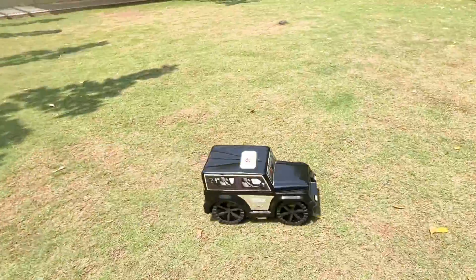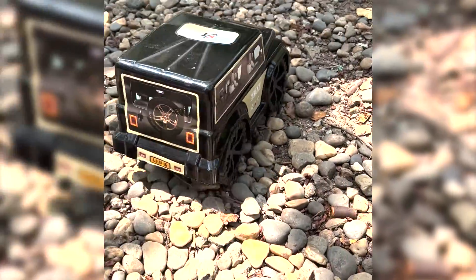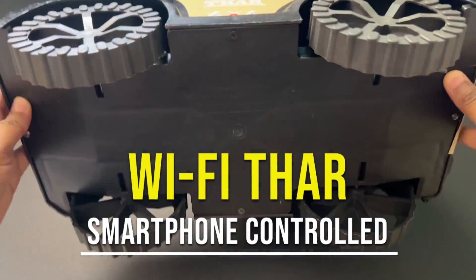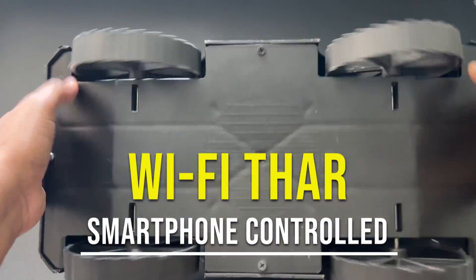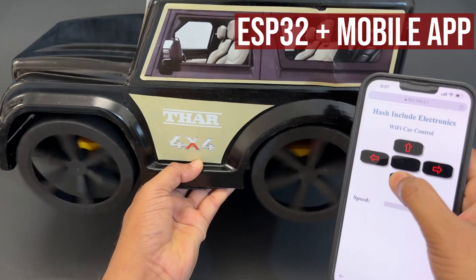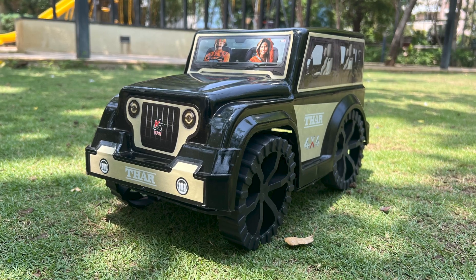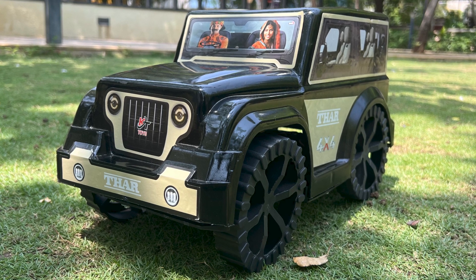Hey guys, welcome back to Hash Include Electronics with another video. In this video we are going to convert this manual car model called Thar, which I bought at a very cheap rate, into an RC car. We will use an ESP32 module and control the car using a smartphone over Wi-Fi. So let's get started and make this Wi-Fi Thar.